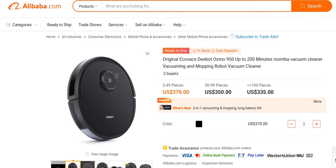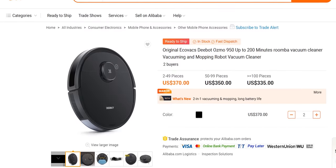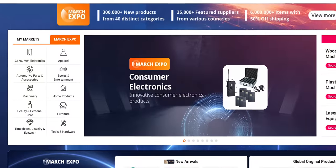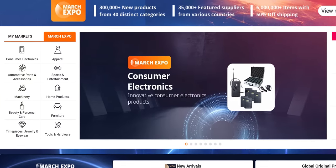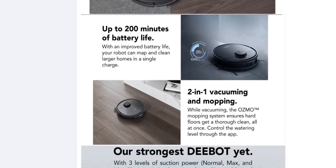Check out the Ecovacs D-Bot Osmo robot vacuum on alibaba.com. They've also got their March Expo 2020 happening which features more than 35,000 global suppliers online of course. Check them out now at the link below.